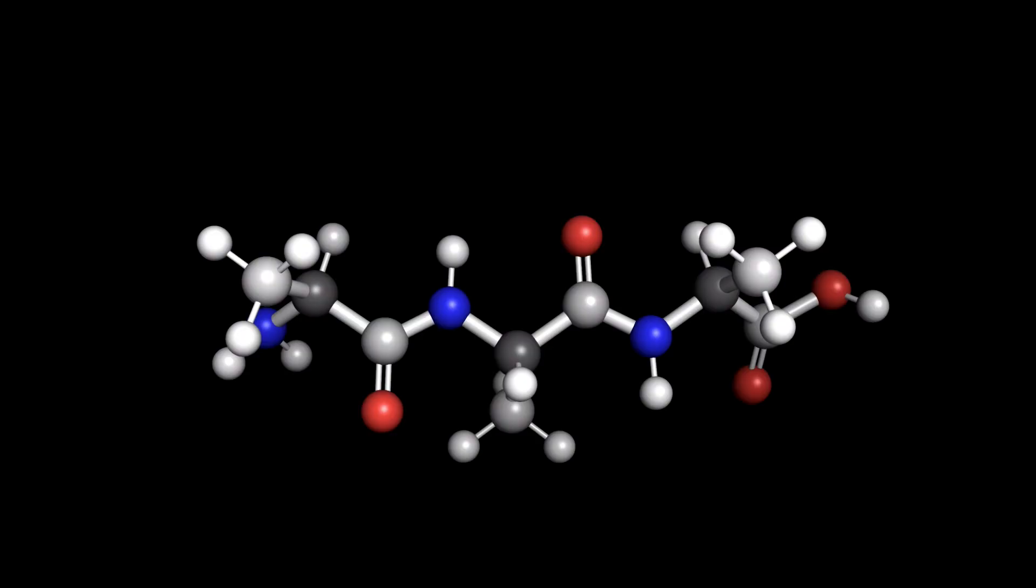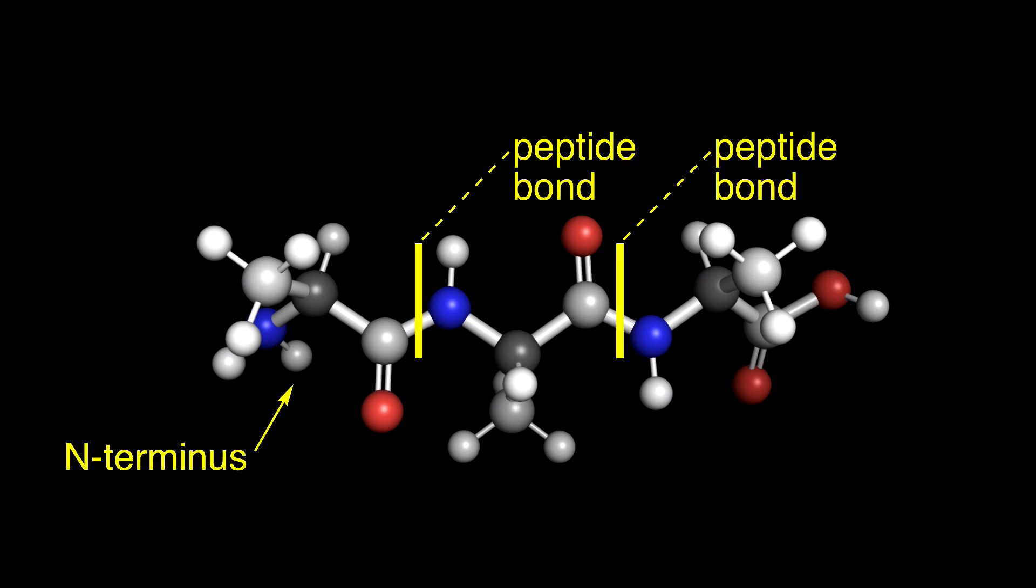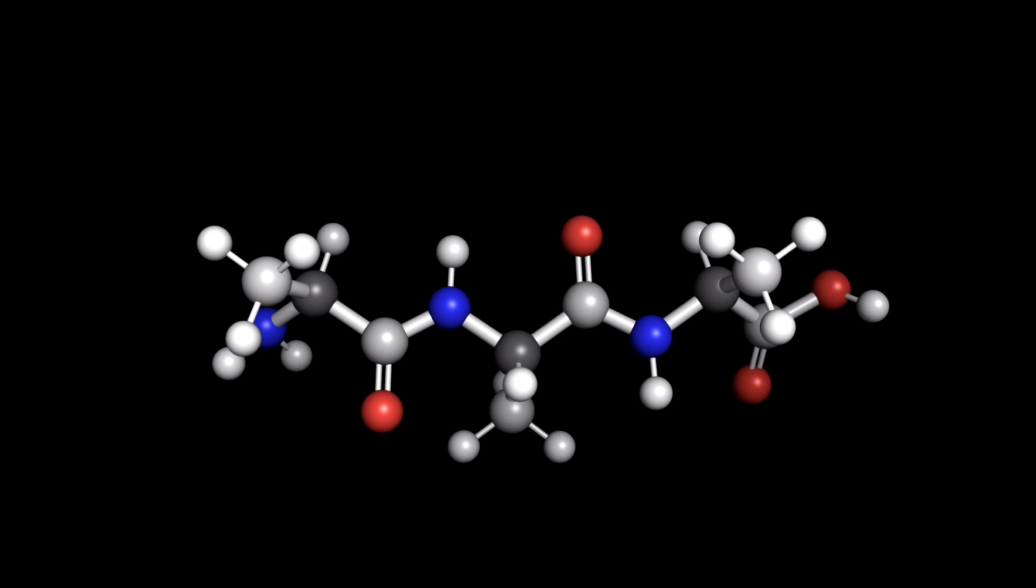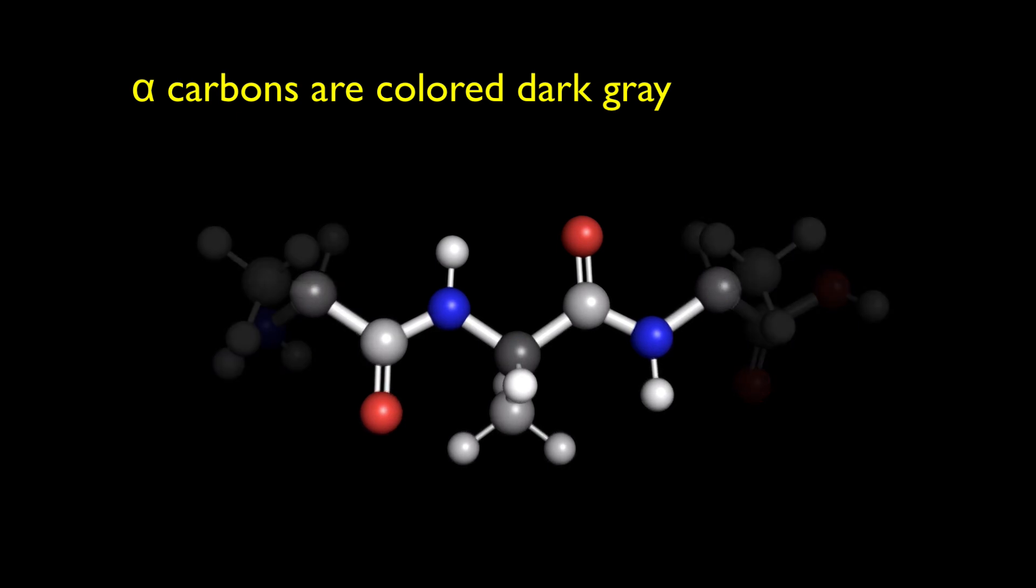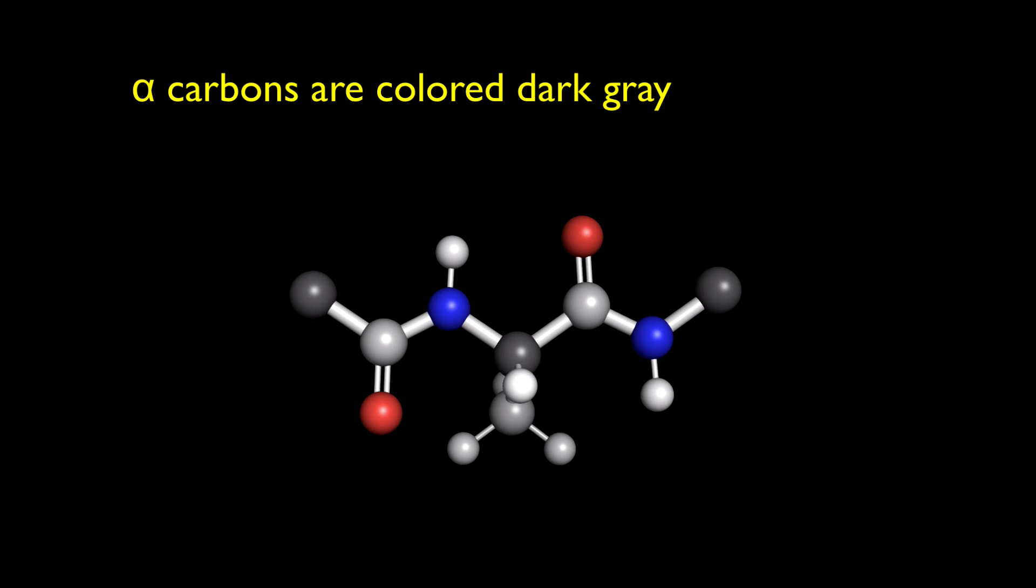We'll start with a tripeptide, made up of three alanine residues. And, for good measure, let's show the peptide bonds, and label the N-terminus and C-terminus. When we measure Φ and ψ angles for our central alanine, we'll need to look at some atoms in the surrounding amino acids. But, we can simplify our structure by removing atoms that are not needed to view Φ or ψ for the central alanine.